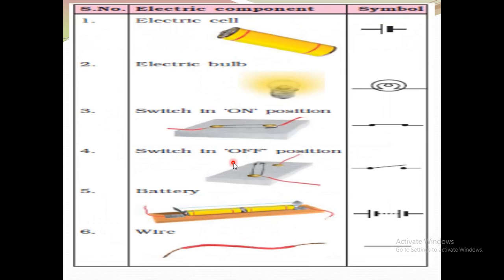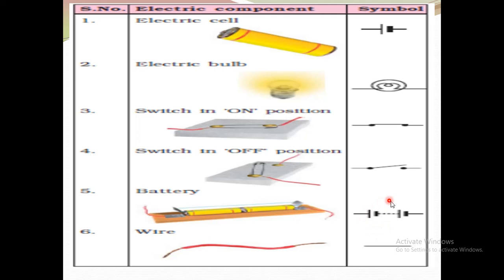Now let's see some of the components of a circuit and their symbols. In the diagram, you can see the components represented by certain symbols. An electric cell is represented by its symbol; an electric bulb has its own symbol. A switch in the on position has one symbol, and in the off position another. A battery and connecting wires also have their respective symbols used when drawing an electric circuit.